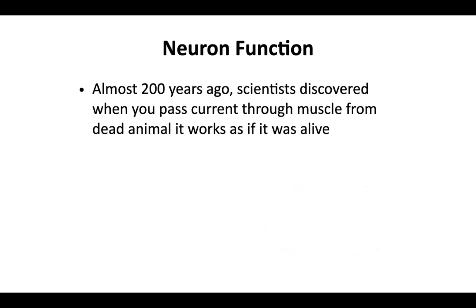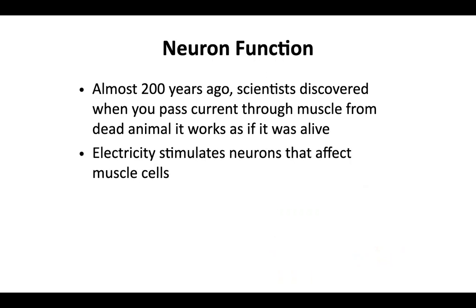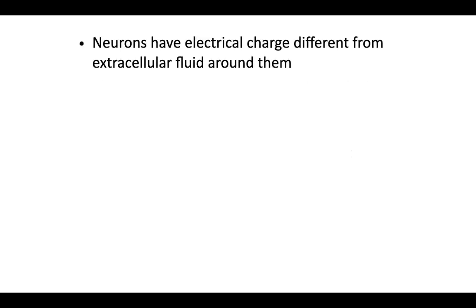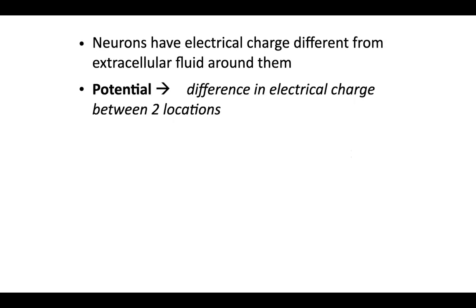The signaling activity of the nervous system is electrical inside neurons but chemical between neurons. Almost 200 years ago, scientists discovered that passing an electric current through the muscle of a dead animal still caused the muscle to work, showing that neuron function is dependent on electrical activity. Neurons have an electrical charge different from the extracellular fluid around them — this is called potential, measured in millivolts in biology.